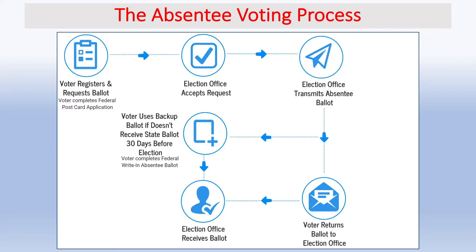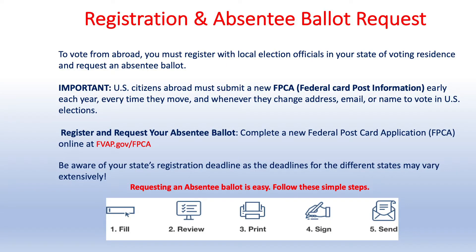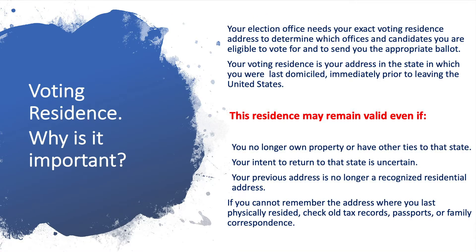As you can see, the absentee voting process looks complicated, but in reality it's very simple. It's very important that you register to vote early every year when there is an election. Voting residence is very important. As you remember, when you lived in the United States, you voted in your state for federal, state, and local elections. This is true when you live overseas — you will vote through the state where you have your legal residency.